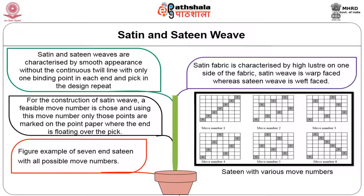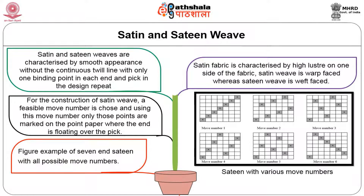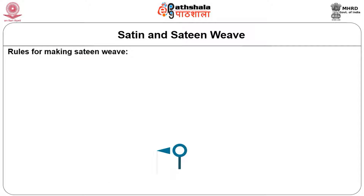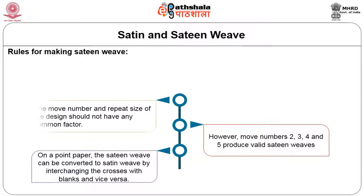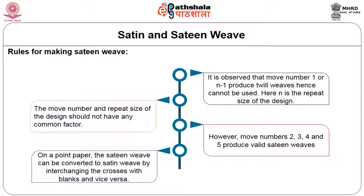Rules for making satin weave: move number 1 and n−1 produce twill weave and hence cannot be used, where n is the repeat size. The move number and repeat size should not have any common factor. Move numbers 2, 3, 4, and 5 produce valid satin weaves for a seven-end repeat. On a point paper, the satin weave can be converted to sateen weave by interchanging the cross marks with the blank spaces and vice versa.